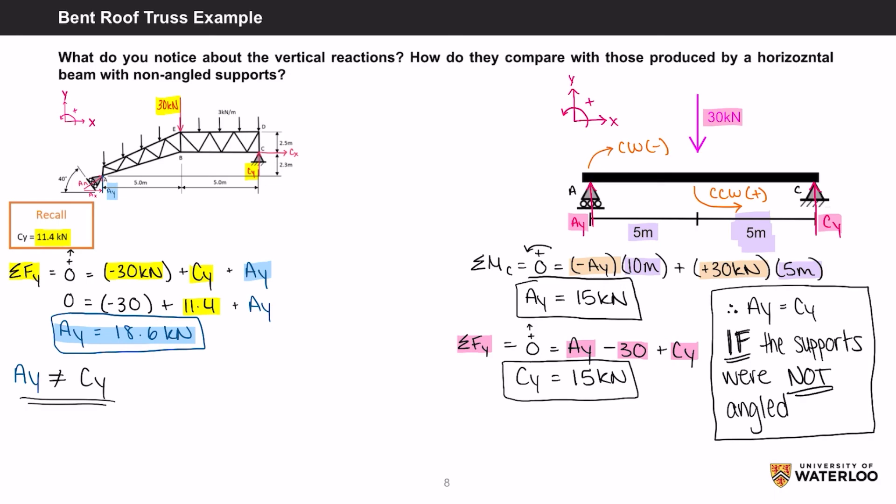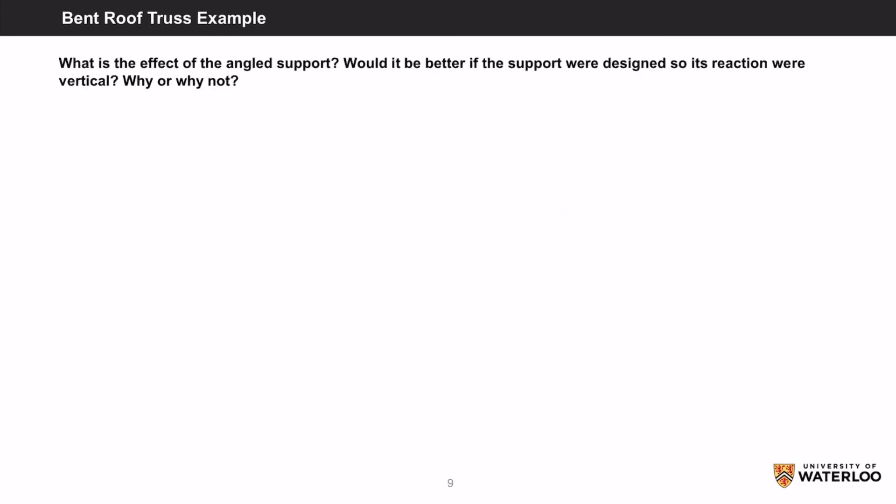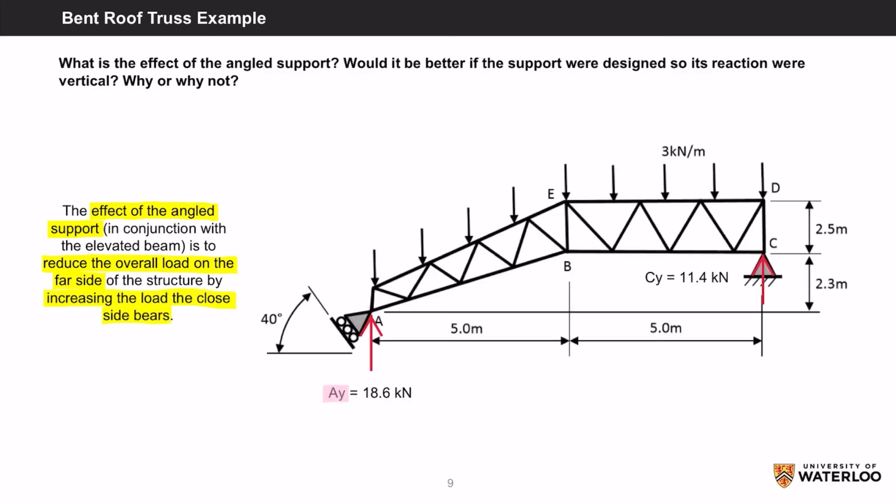In the example we previously did, the reaction forces are not equal because that system had an angled support. What is the effect of the angled support? Would it be better if the support were designed so its reactions were vertical? Why or why not? The effect of the angled support in conjunction with the elevated beam is to reduce the overall load on the far side of the structure by increasing the load that the closed side bears. So A took more of the load of the structure than C since A is angled. Just to clarify, A is the closed side that carries more weight than C.